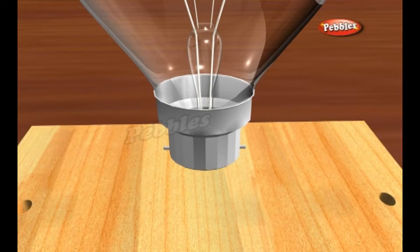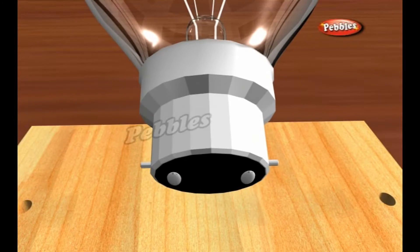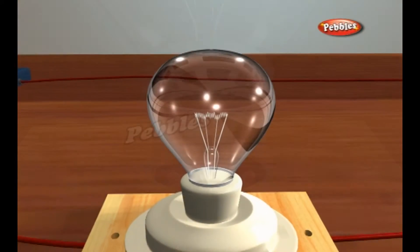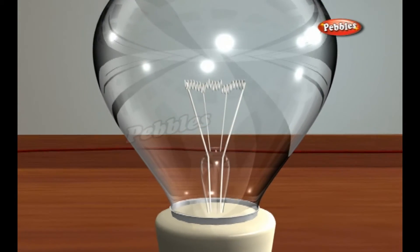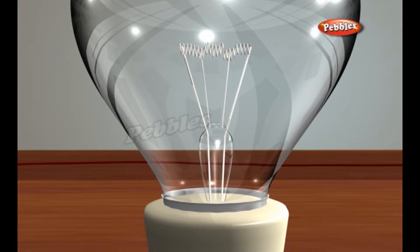At the base, they have two metal contacts which connect to the ends of an electrical circuit. The metal contacts are attached to two stiff wires which are attached to a thin metal filament. The filament sits in the middle of the bulb held up by a glass mount.